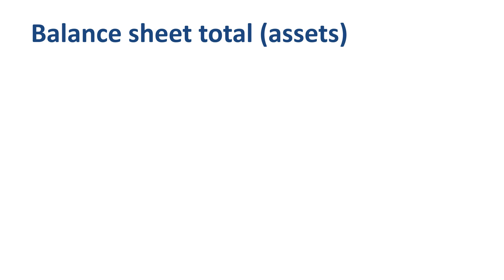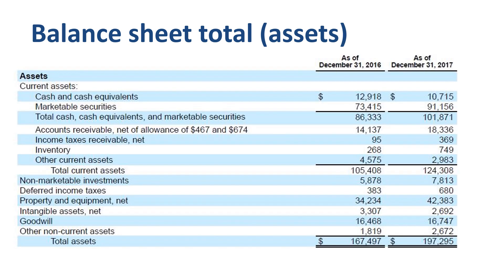Here is the asset side of Alphabet Inc's balance sheet for year-end 2016 on the left and year-end 2017 on the right. The balance sheet total is large — $197.3 billion in 2017 — and significantly bigger than last year's balance sheet total. Alphabet Inc is growing considerably. To select specific items for further review, I look at the absolute size of the line items, the movement, and the risk level associated with the item.